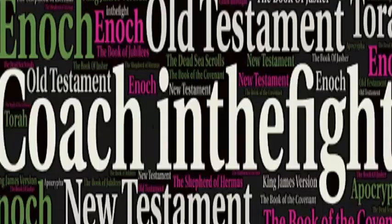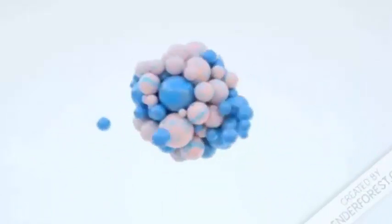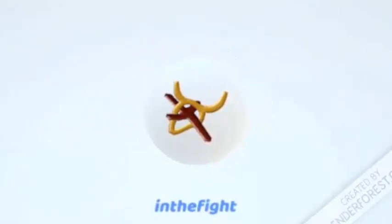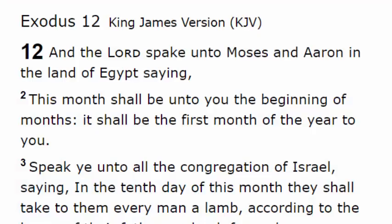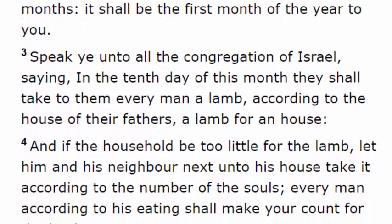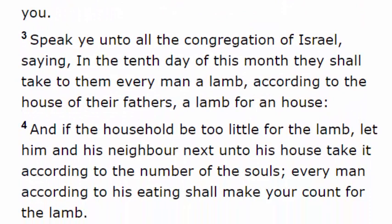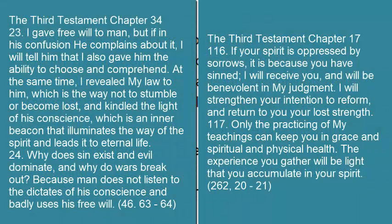We're not going to hit that many books today, but we're going to be doing something similar as we jump throughout scripture, looking at the 10th day of the first month. The first verse we'll want to look at is in the book of Exodus chapter 12. This is when the children of Israel were about to leave Egypt and started getting commands from the Father related to Passover. Verse 3 reads: 'Speak ye unto all the congregation of Israel, saying, In the 10th day of this month they shall take to them every man a lamb, according to the house of their fathers, a lamb for a house.'